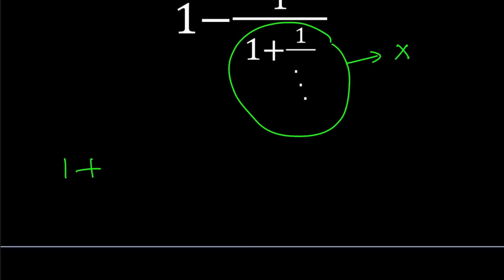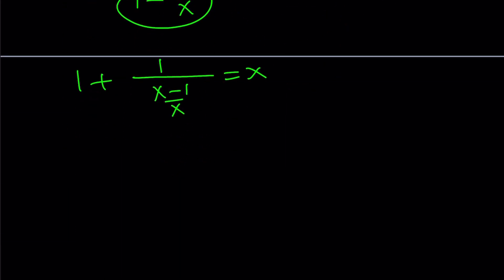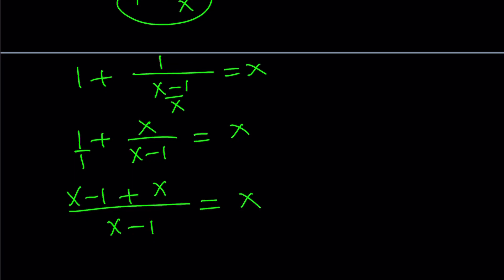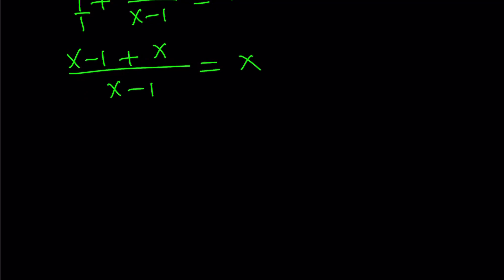This gives us 1 plus 1 over 1 minus 1 over x equals x. Let's make a common denominator. That's going to become 1 plus 1 over x minus 1 over x equals x. Then we flip x minus 1 over x. So that gives us 1 plus x over x minus 1 equals x. Now we're going to make a common denominator. Multiply the 1 by x minus 1 over x minus 1. That gives us x minus 1 plus x over x minus 1 equals x. We add the numerators. x plus x is 2x. So that gives us 2x minus 1 over x minus 1 equals x.